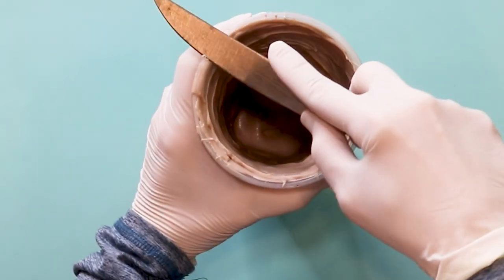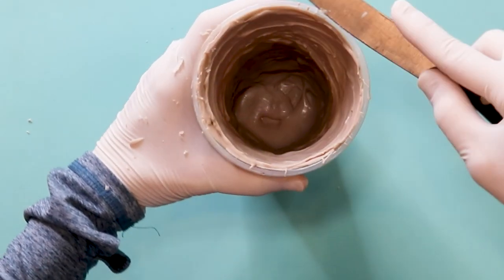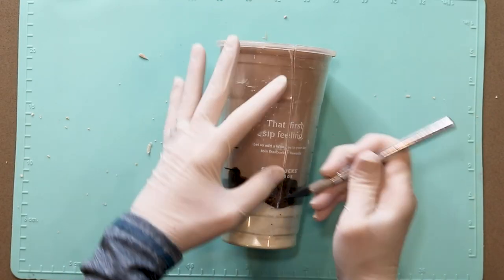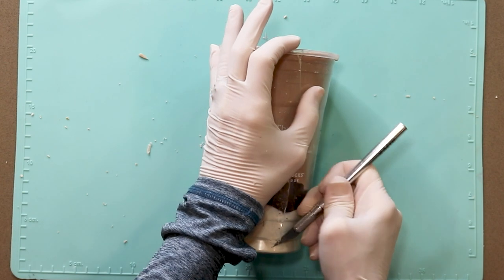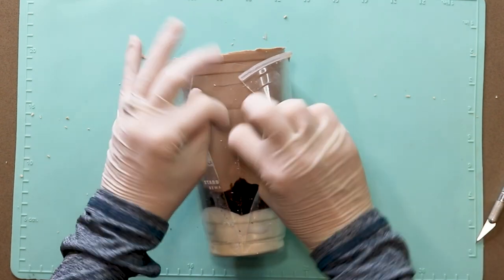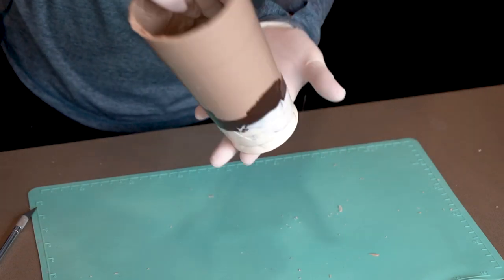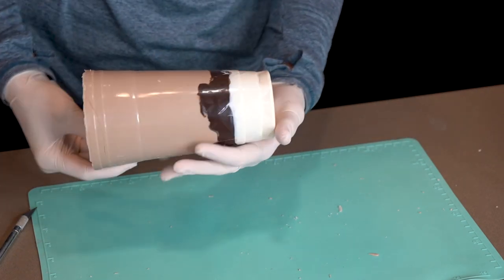Okay, my chocolate is set up completely now. And here I'm using a knife to clean up that top edge. And now it is time for the big reveal. So I am taking off the tape and gently pulling the chocolate cup out. Look how beautiful that is. It looks so realistic, I think.